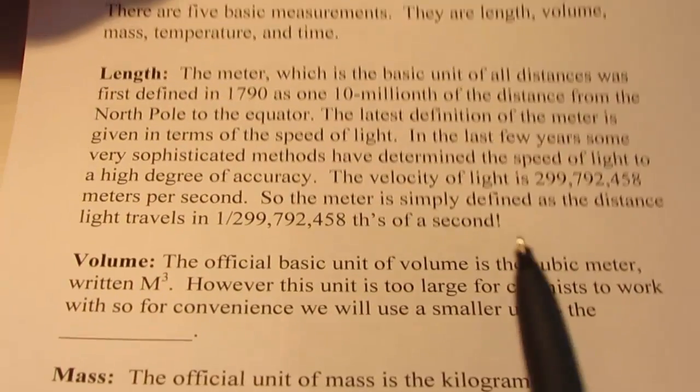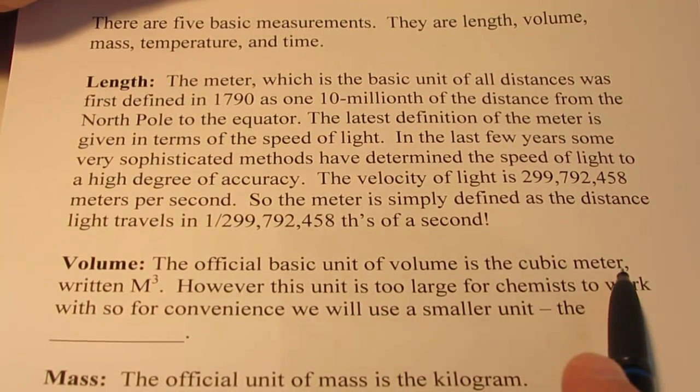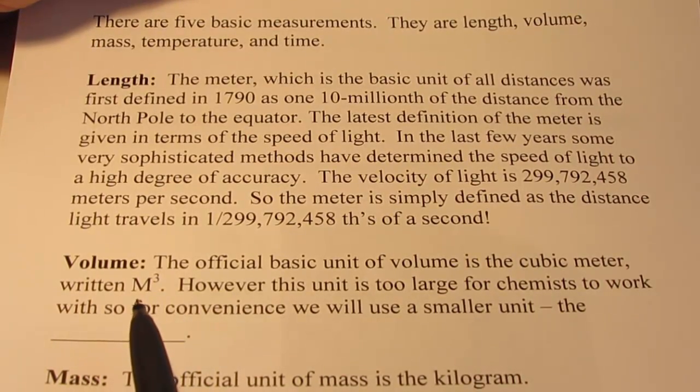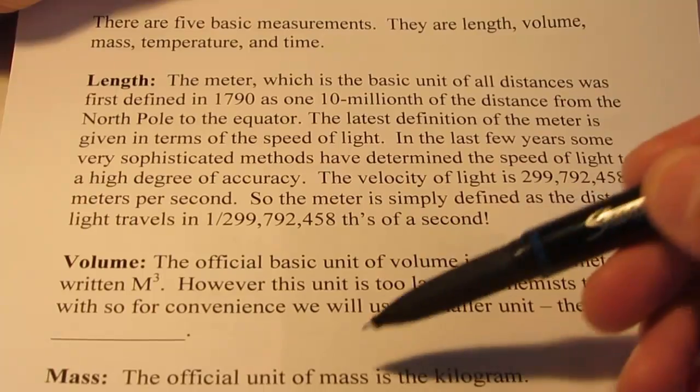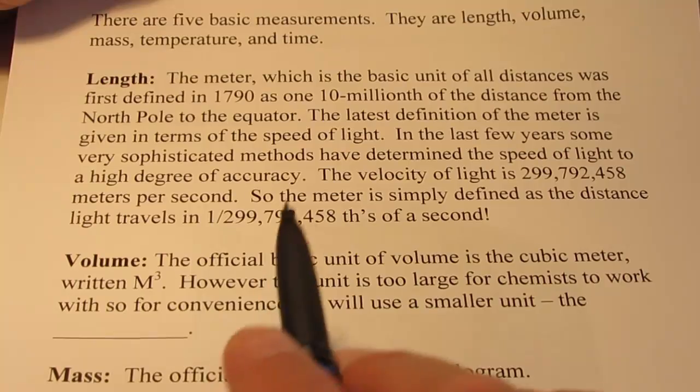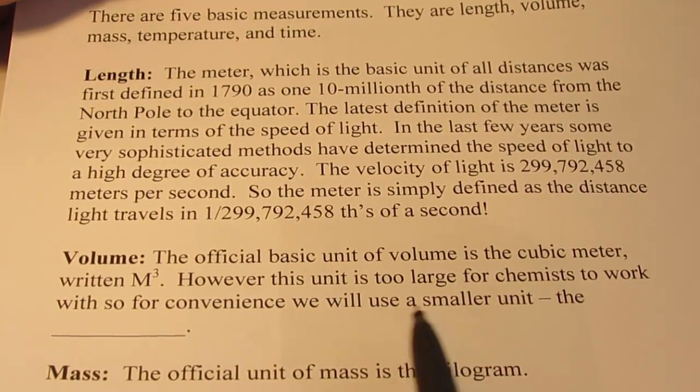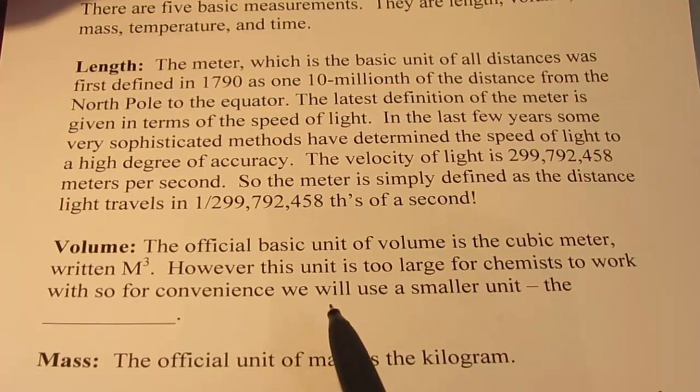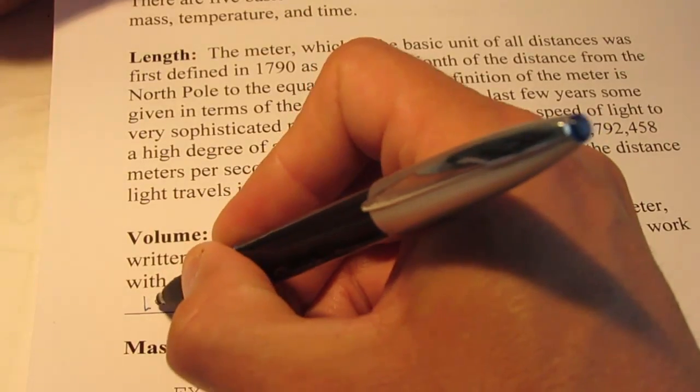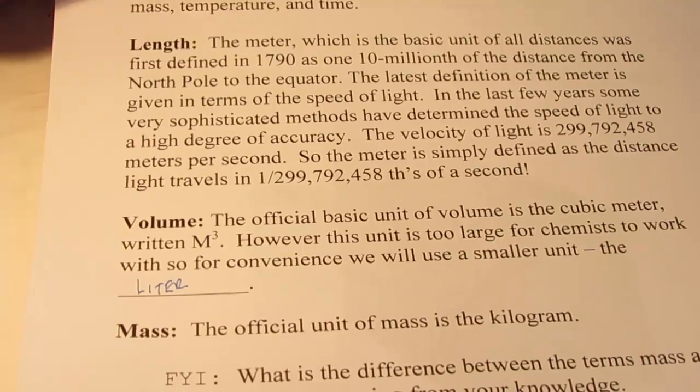Volume. The basic unit of volume is the volume of a cubic meter written with a capital M cubed. So if you can imagine a cube that's a meter tall by a meter wide by a meter deep, that would be the cubic meter. But that's a pretty big volume, much too large for us to work with. So for convenience sake, we will use a smaller unit. We like to use the liter, which I will actually define for you later today.